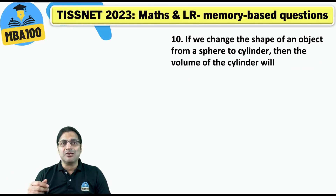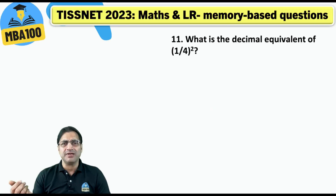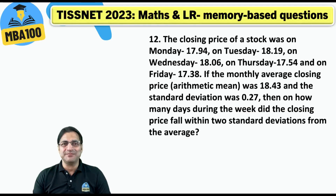This was a conceptual question — the volume would not change. Why would it change? For decimal equivalent: they do ask a few such questions on testnet. The answer is 0.0625.